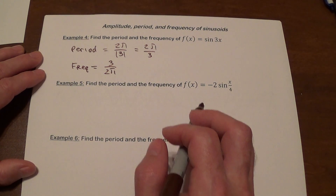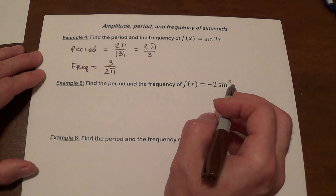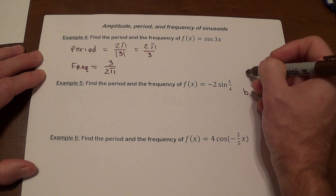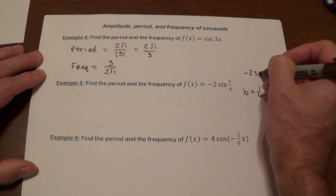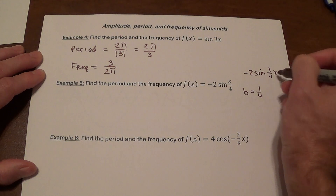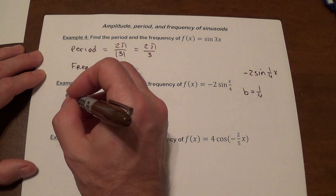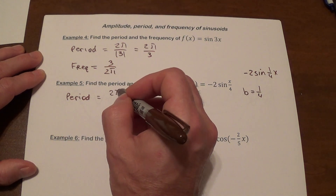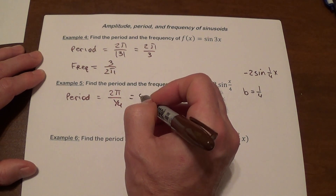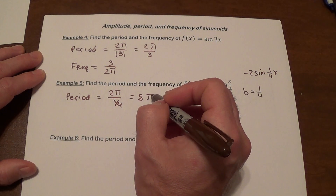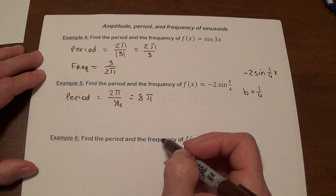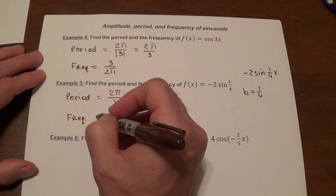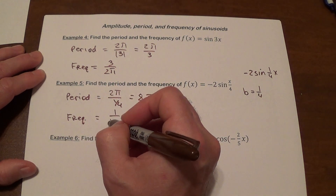For the next graph, we need to be careful — the value of b is one-fourth, because what we have is negative sine of one-fourth x. To find the period, we divide 2π by one-fourth, which gives us 8π. The frequency is the reciprocal of that, which is 1 over 8π.